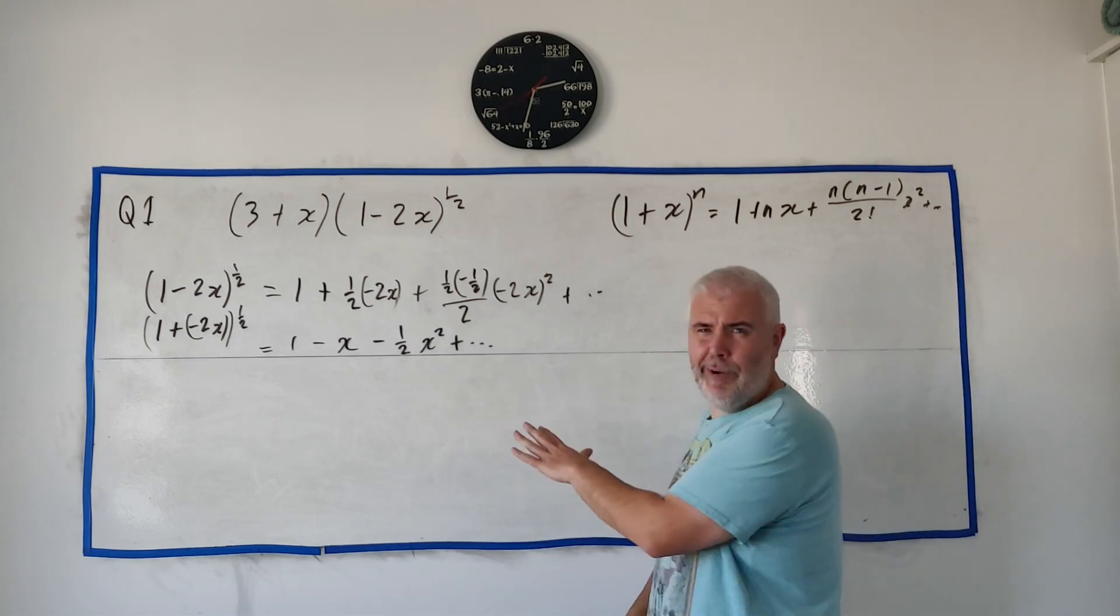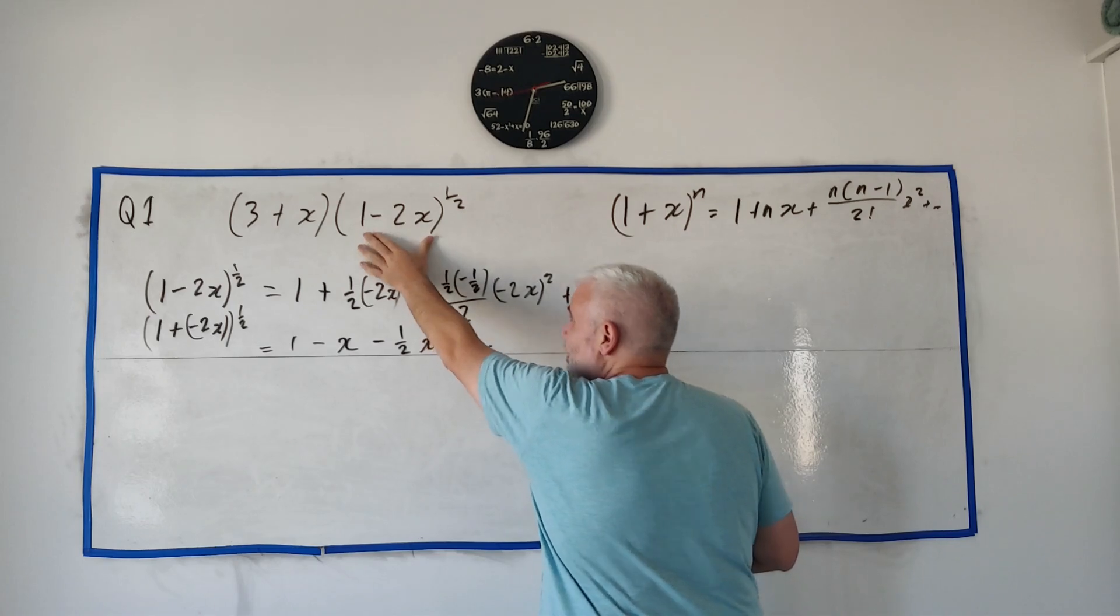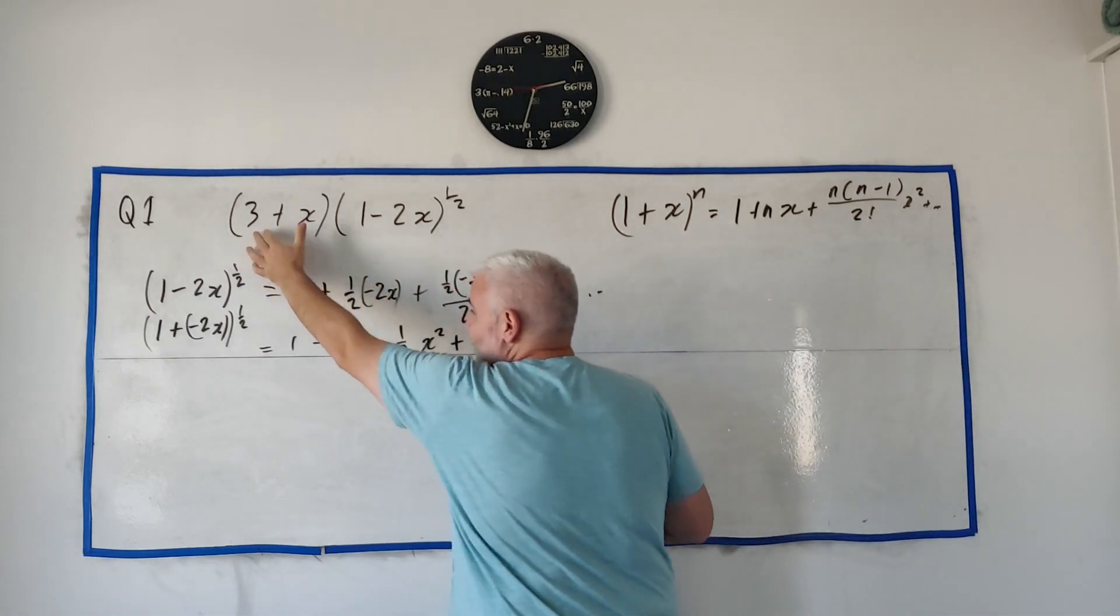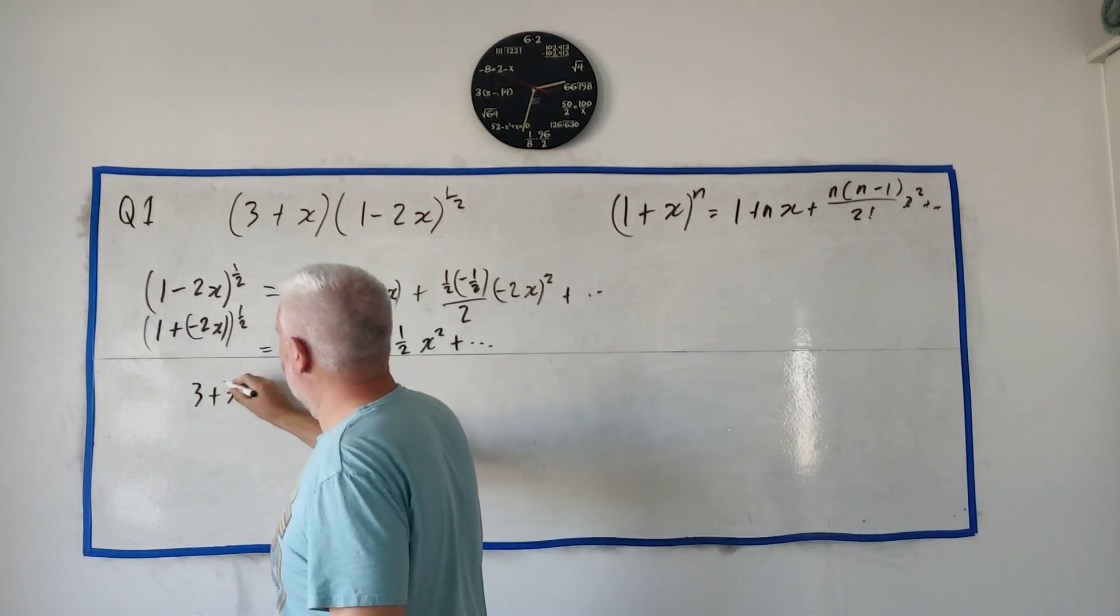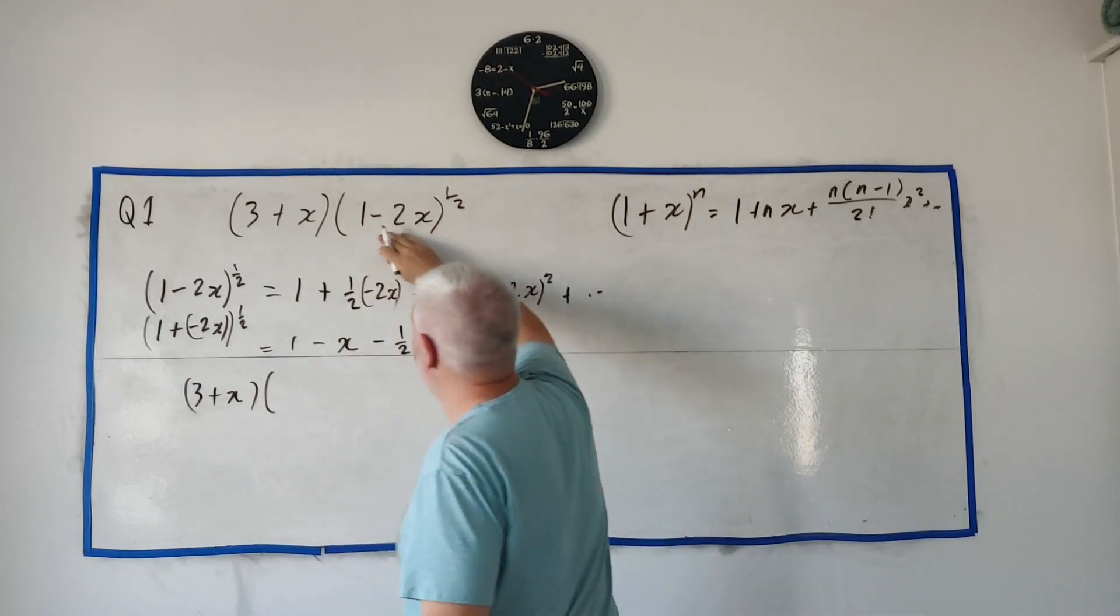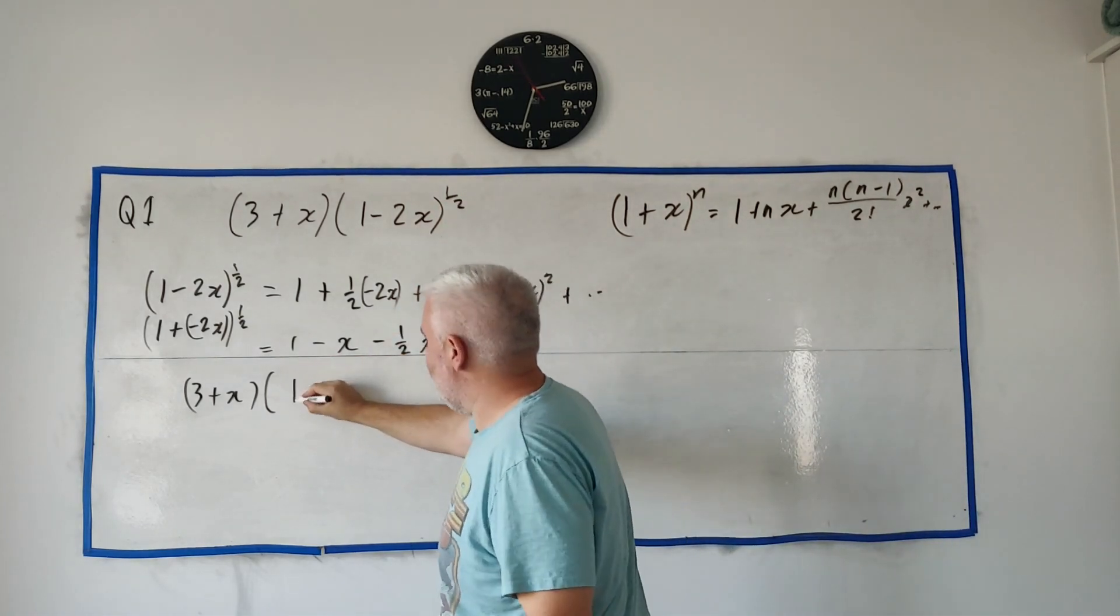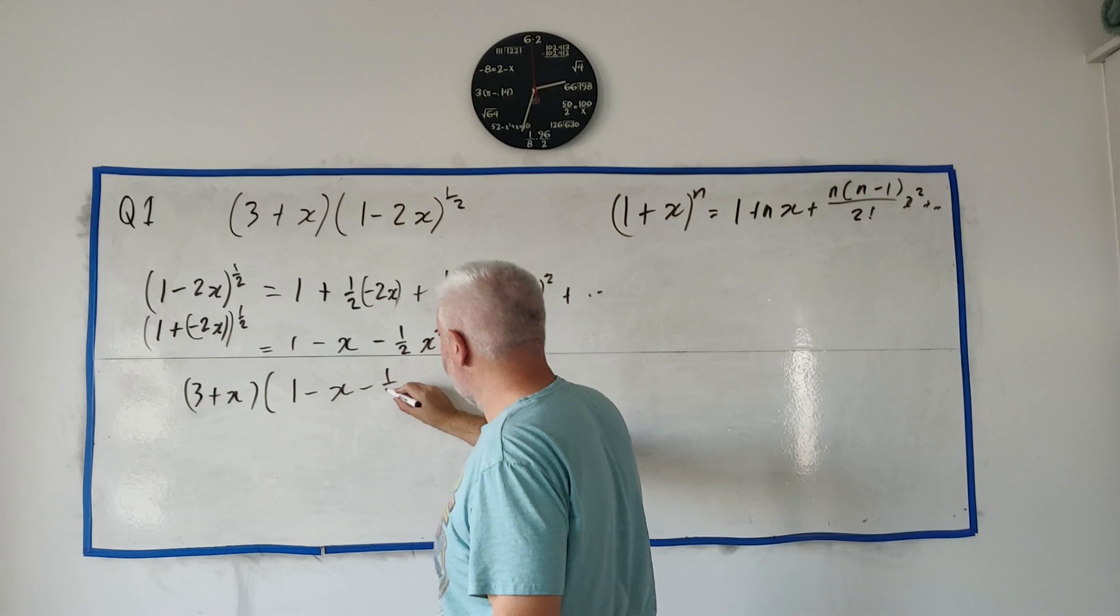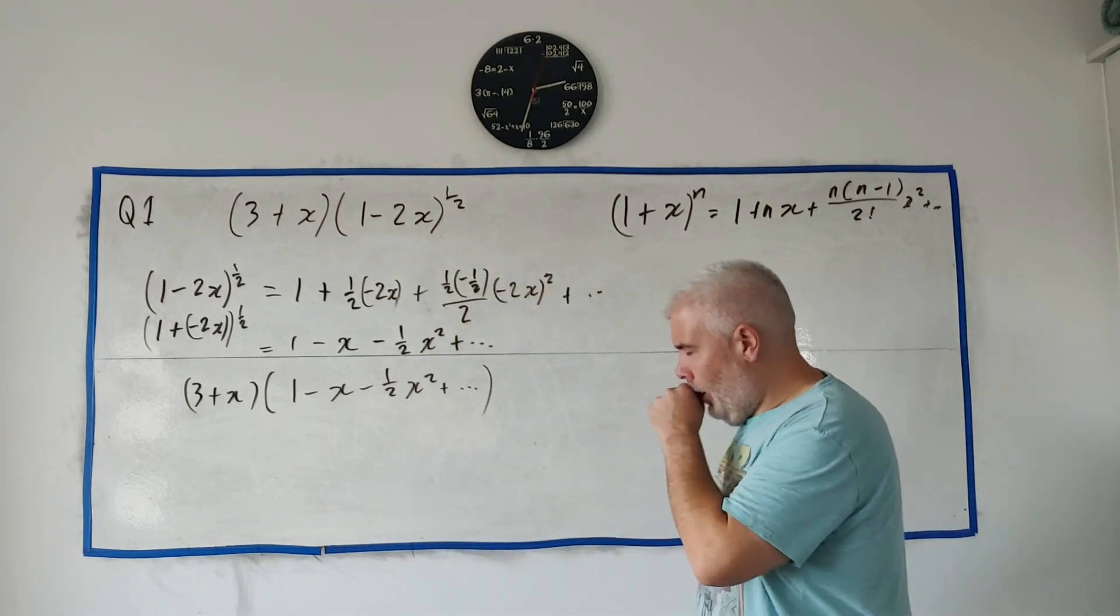They just want you to remember to multiply by this. Let's rewrite this whole term up here. 3 plus x. But instead of 1 minus 2x to the power of a half, put it in our expansion. 1 minus x minus a half x squared plus dot dot dot. Sorry. And let's multiply this out.